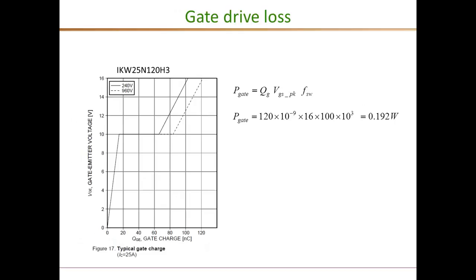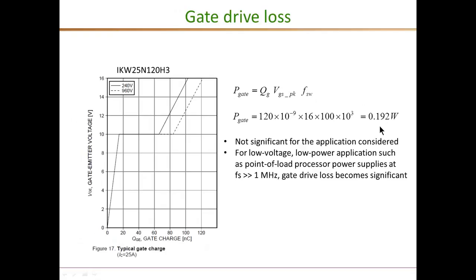Another source of loss, though not very significant for most applications, is the gate drive loss. For the given IGBT device, a figure shows gate charge versus gate-emitter voltage. Assuming operation at 15 volts gate voltage, it requires 120 nanocoulombs each time we charge the gate capacitance to turn on the device. This gate charge times the peak gate voltage gives the energy, and times the switching frequency gives the average gate drive power loss — which for this device works out to a negligible 0.2 watts. However, for very low voltage, extremely high frequency applications such as point-of-load converters operating at tens of megahertz, gate capacitance and gate drive loss can become significant.